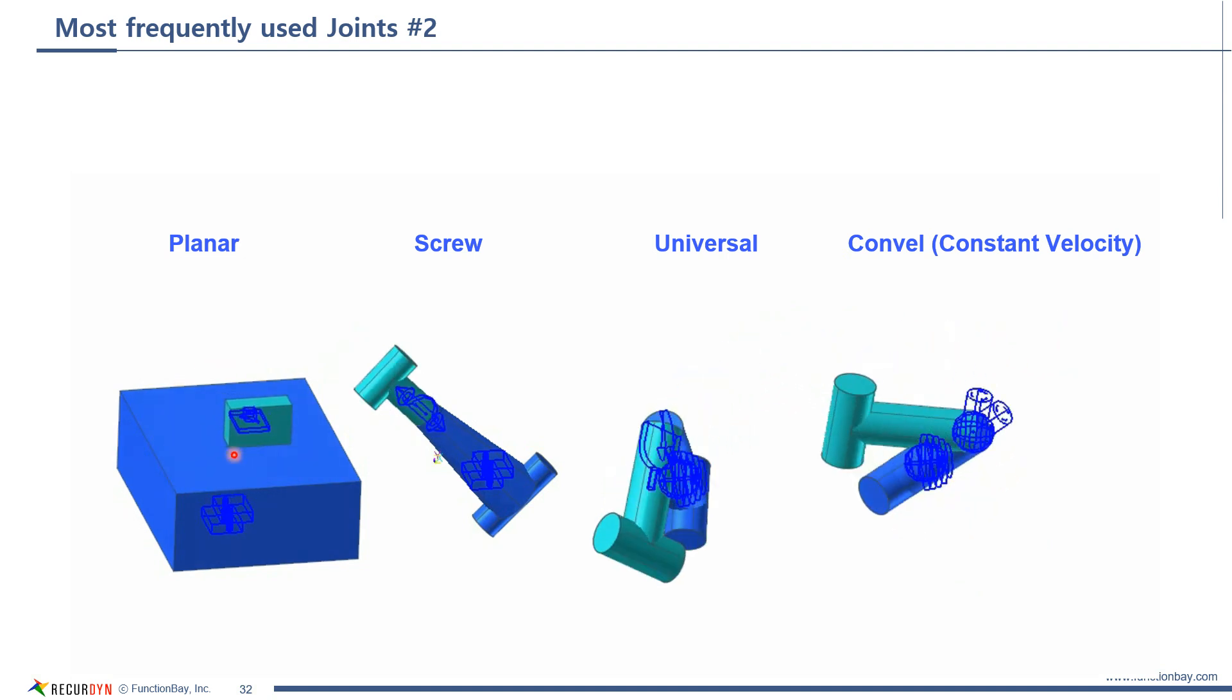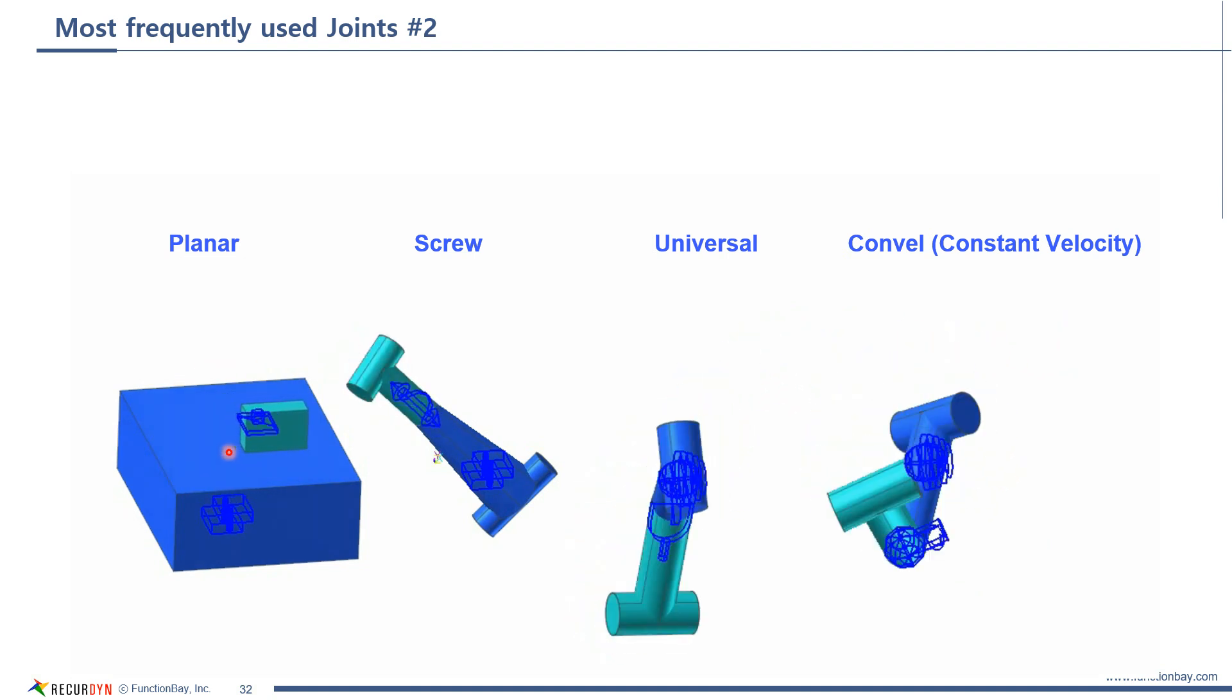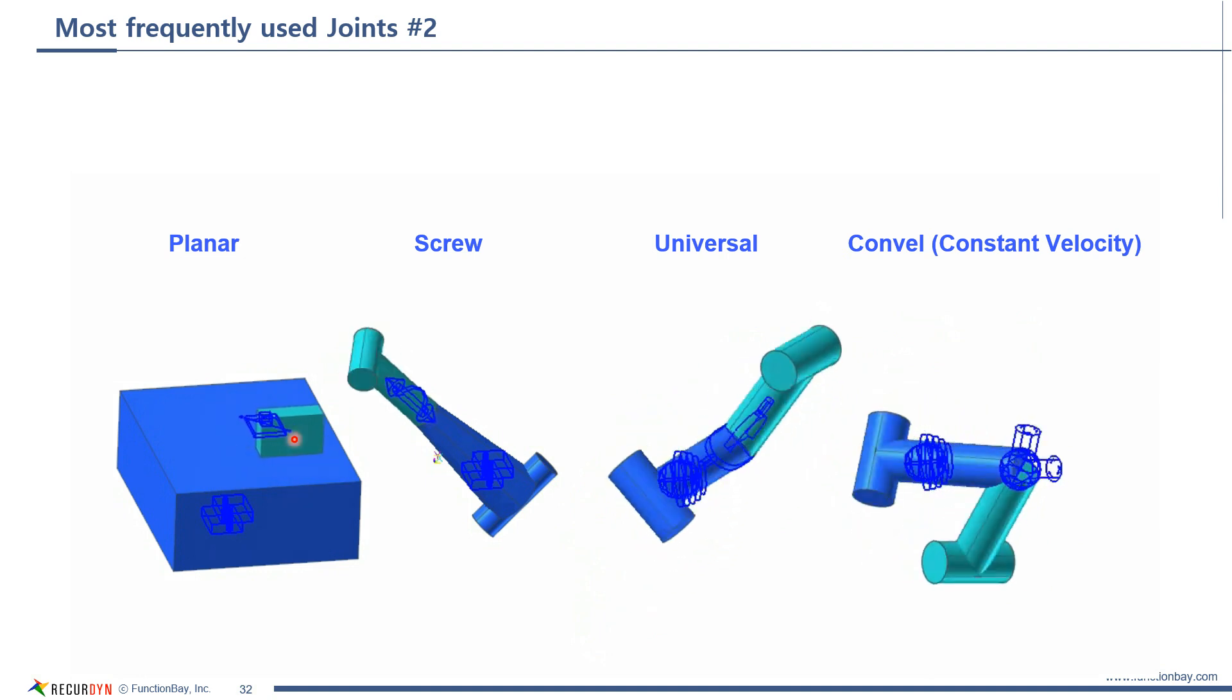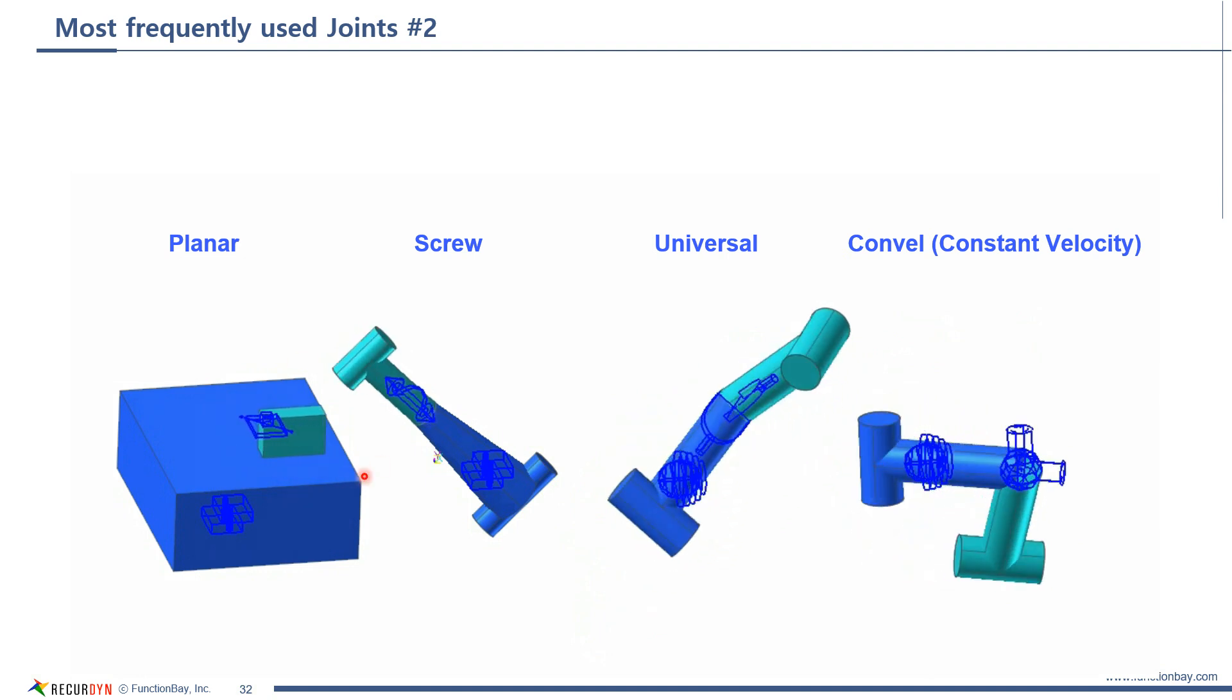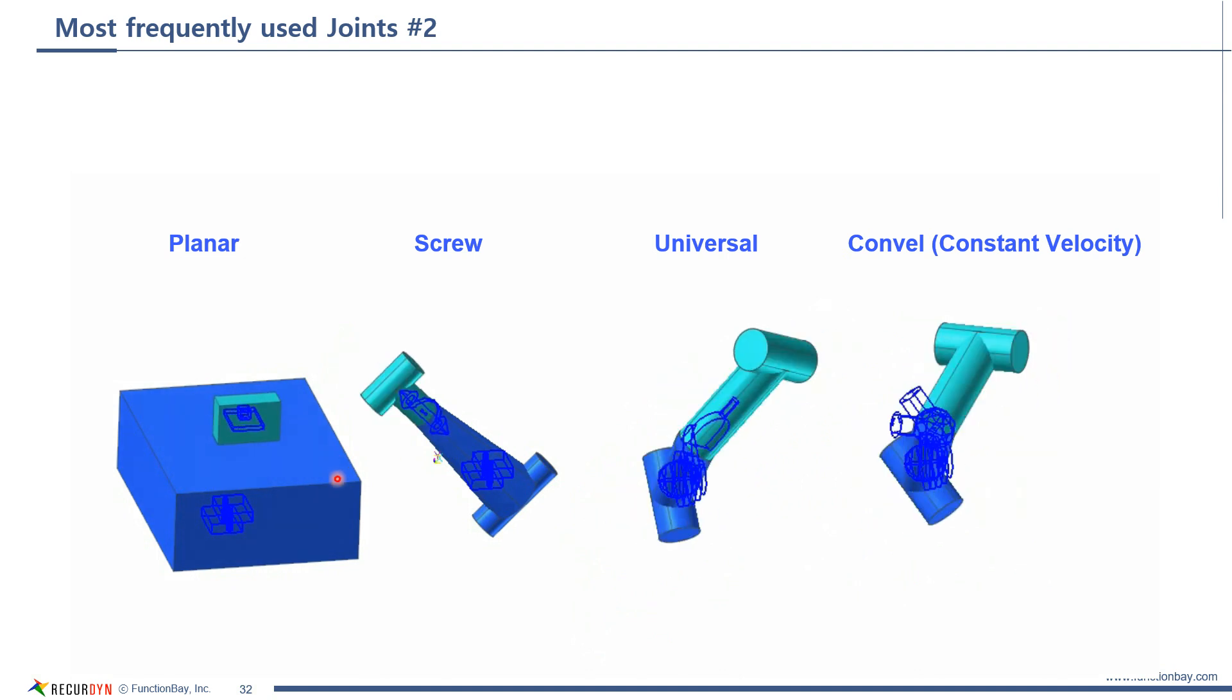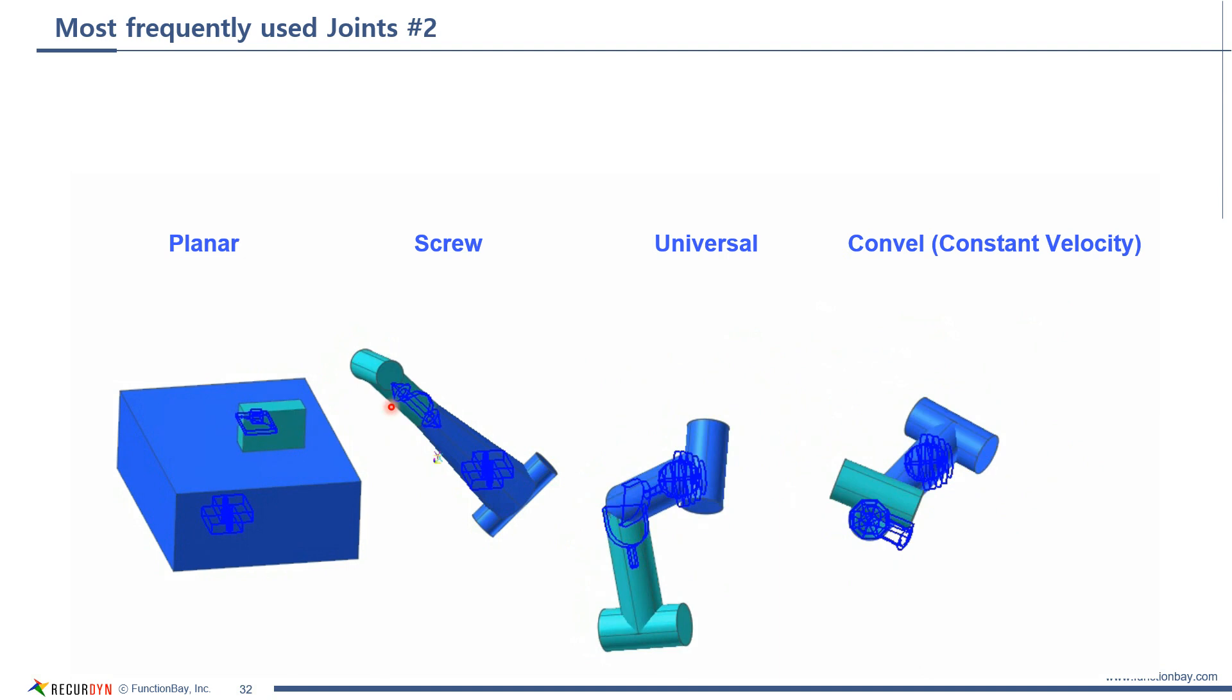Planar joint allows two translational degree of freedom and one rotational degree of freedom. It has one rotational degree of freedom, but there is translational movement proportional to the rotational angle.